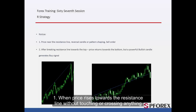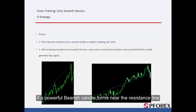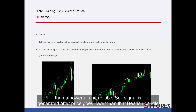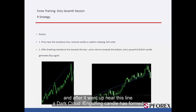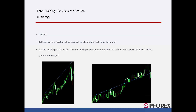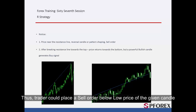When price rises towards the resistance line without touching or crossing anything, if a powerful bearish candle forms near the resistance line, then a powerful and reliable sell signal is generated after price goes lower than the bearish candle. On the left graph, price could not cross the gradient resistance line, and after it went up near this line, a dark cloud or engulfing candle formed. Thus, a trader could place a sell order below the low price of the given candle.